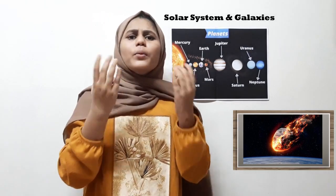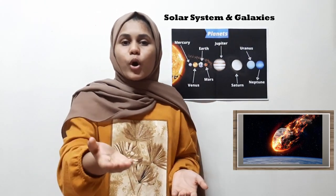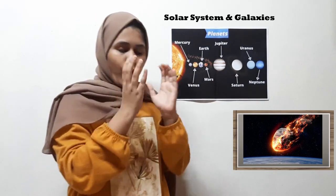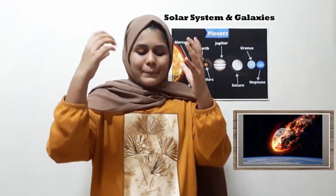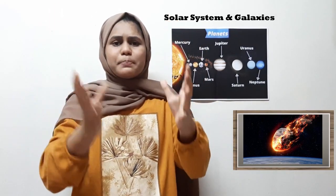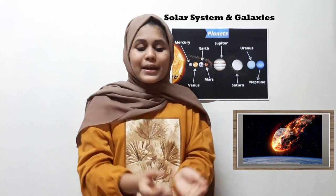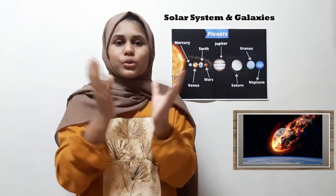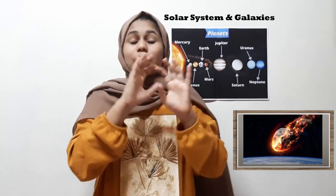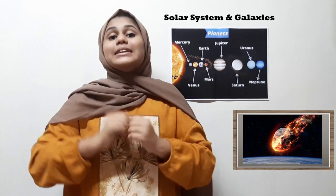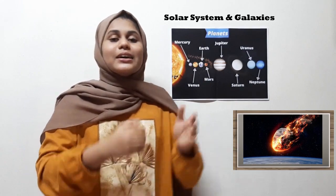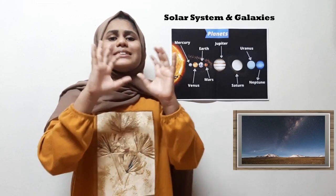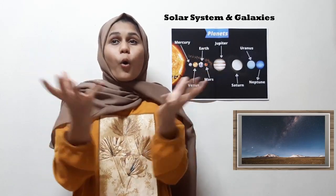Meteorites and meteors are similar words, but they do not have the same meaning. Meteors occur when meteorites at high speed heat up and flame through the Earth's atmosphere — they look like a fireball or a shooting star, which is what makes them a meteor. That covers the key elements of our solar system.